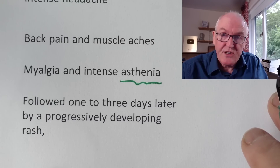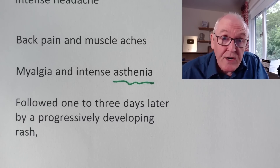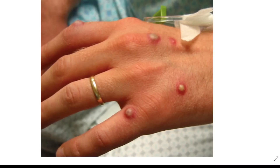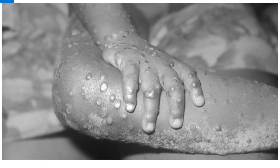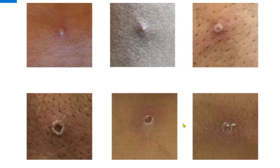This is followed one to three days later by the progressive development of a rash. Here we see an example of the pustular spots caused by monkeypox — they can occur on any part of the body. This picture shows the progression of a single spot: it starts as a raised area, becomes more prominent, then fills with pus, bursts, dries out, and gradually flakes off leaving a scab and possibly a scar. The rash can also be very itchy and sometimes painful.